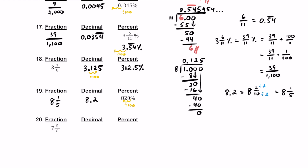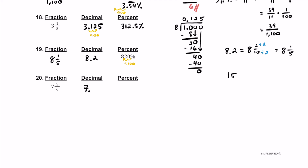That leaves us with number 20 — our last one. We have 7 and 5 sixths. Whenever we have a mixed number, you can keep the whole number of 7, and then do long division for 5 sixths. So 5 inside the house divided by 6. 6 won't fit into 5, but add a decimal and a 0. 6 times 8 is 48 — as close as we can get. Remainder of 2. Add a 0 and bring it down. 6 times 3 is 18. Remainder of 2. Notice that this 2 and 2 are just going to keep repeating — so the 3 is going to repeat. So 5 sixths is going to be 0.83 repeater, with just the 3 repeating.